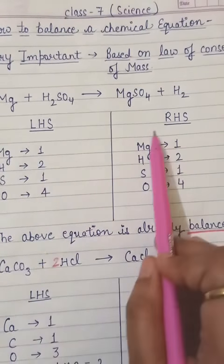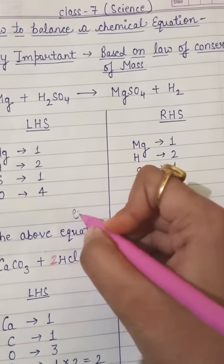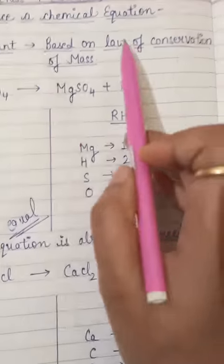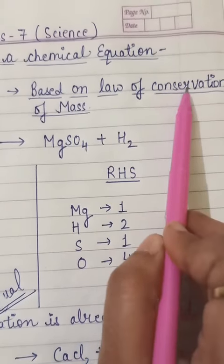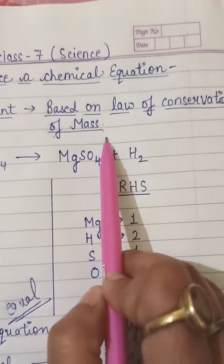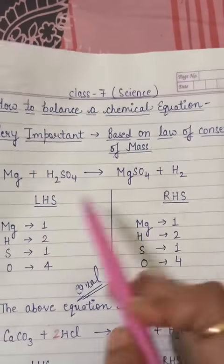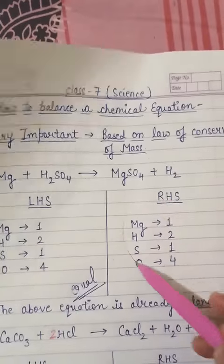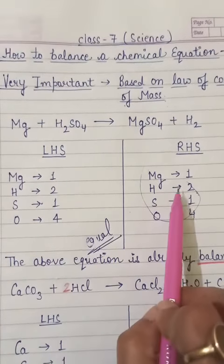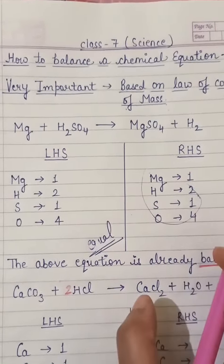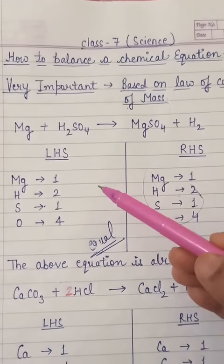As you can see, Mg is one here and one there. H is two, here also two. S is one, here also one. O is four, here also four. The number of atoms on both sides are equal. Whenever in a chemical equation the number of atoms in LHS and RHS are equal, it means we have followed the law of conservation of mass. This is what we call law of conservation of mass.